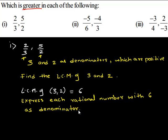First let us express 2 upon 3 with 6 as denominator. We get 3 times 2 is 6 and 2 times 2 is 4.